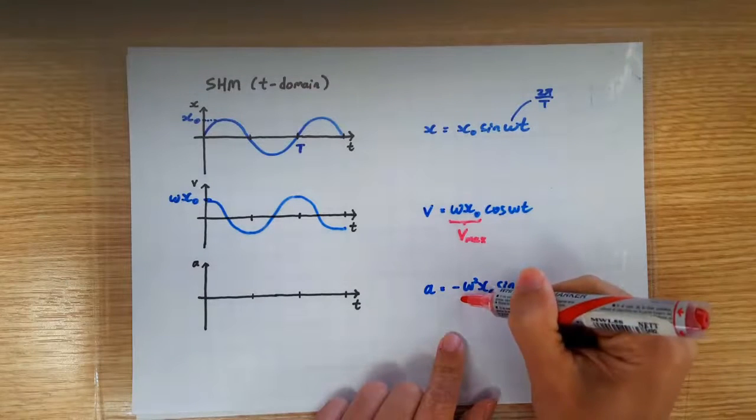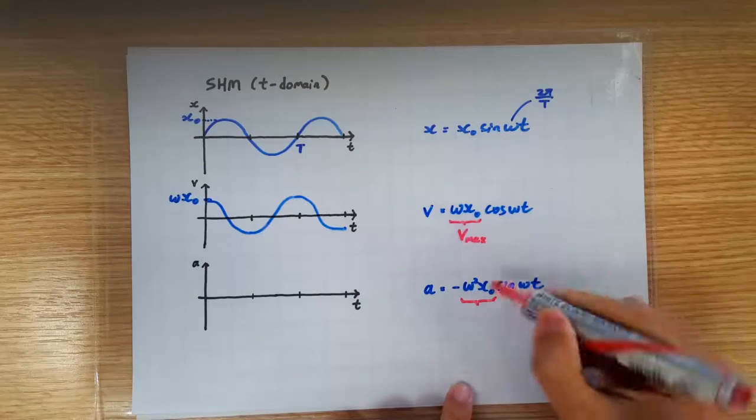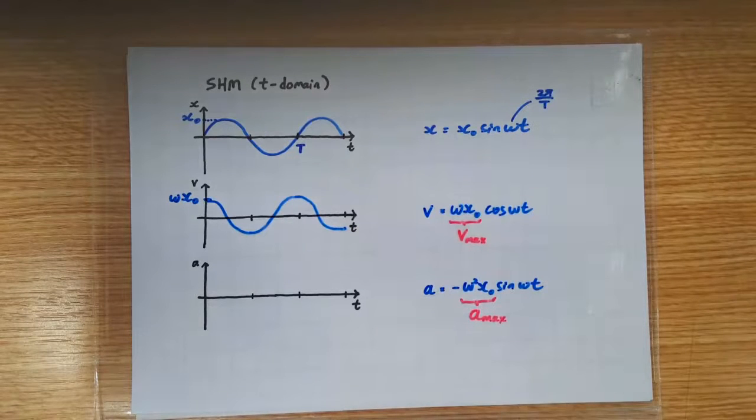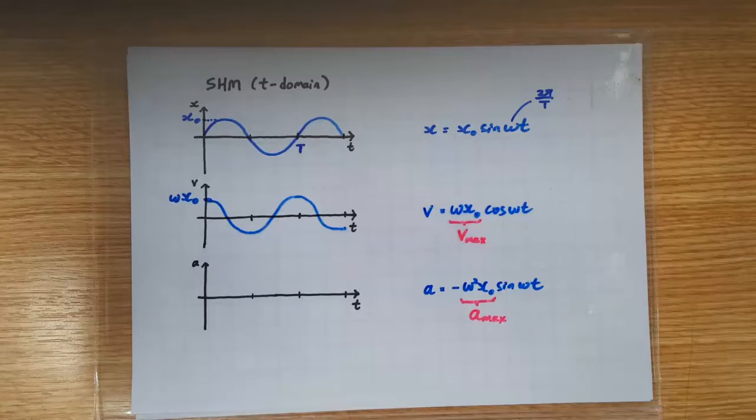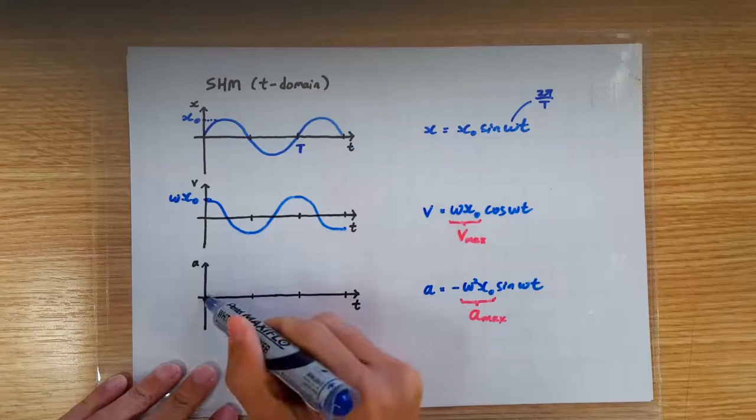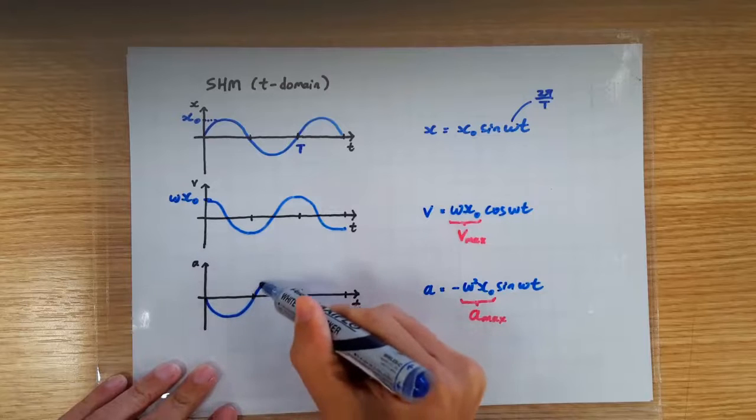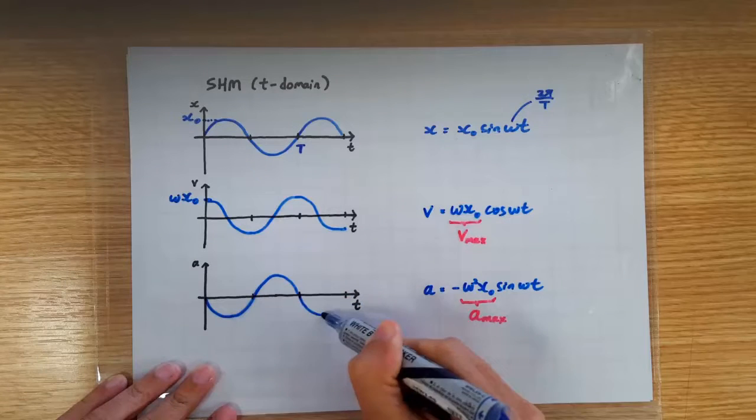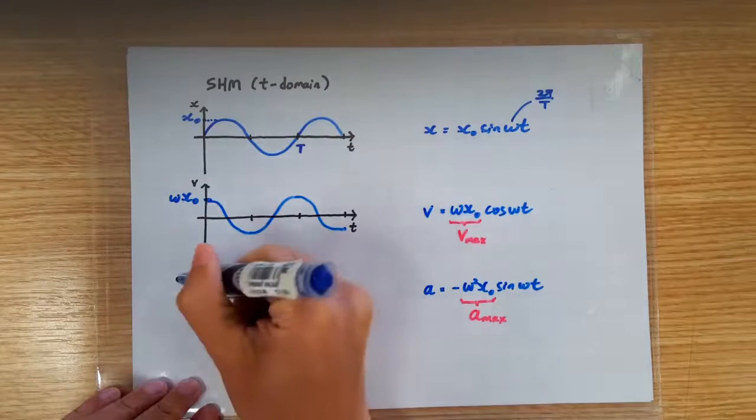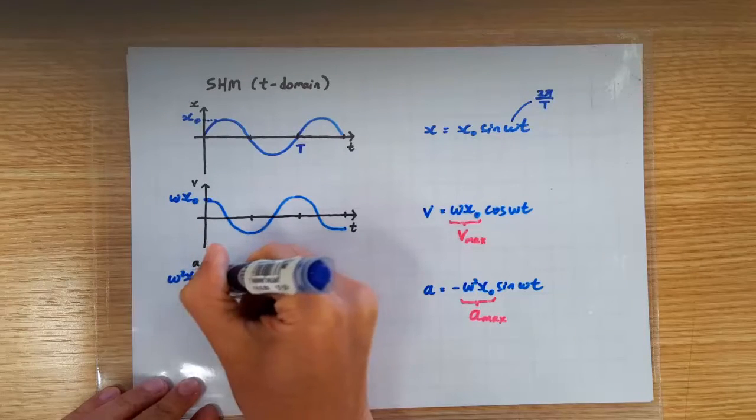Immediately we recognize that ω²x0 must correspond to the maximum acceleration of the oscillation. So the acceleration time graph is negative sin ωt with a maximum value of ω²x0.